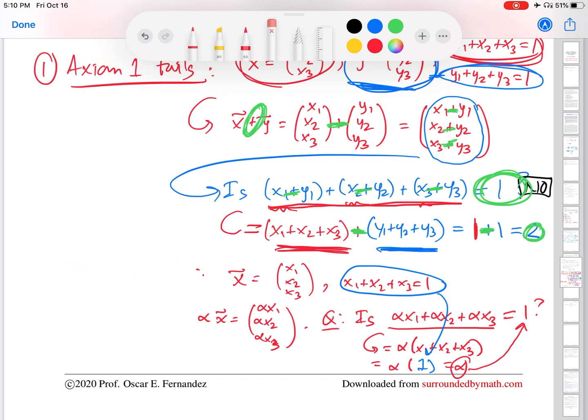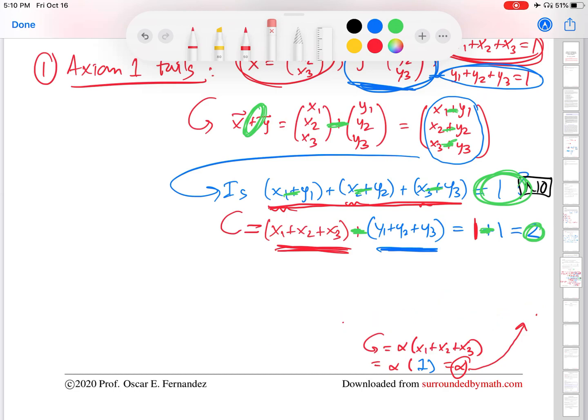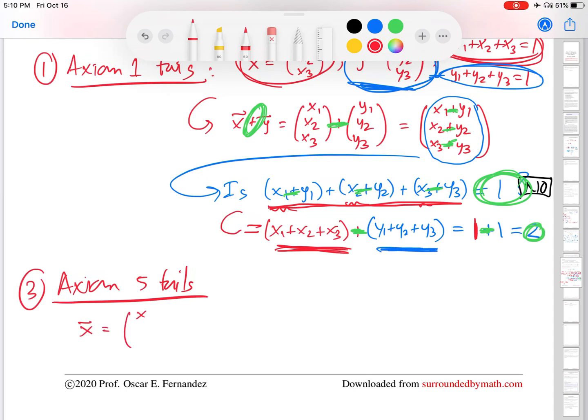I'm going to erase this and then show you what if I were doing this problem, I would have done first, which is just to show that axiom five fails. What is axiom five? That's the existence of the zero element. Vector spaces need to have a zero element to be vector spaces. So number three here, axiom five fails. Why does axiom five fail? I'm looking for a zero element, and I'm looking here at vectors that have three components whose components sum to one.